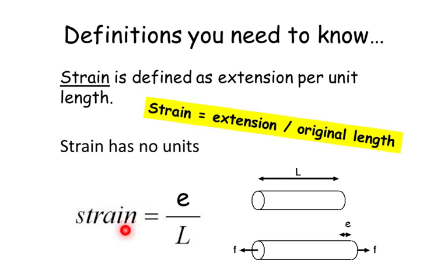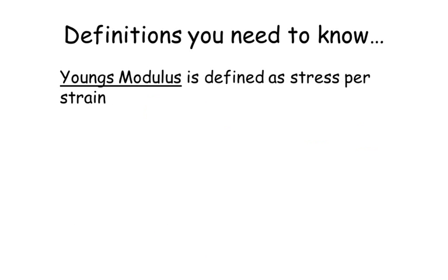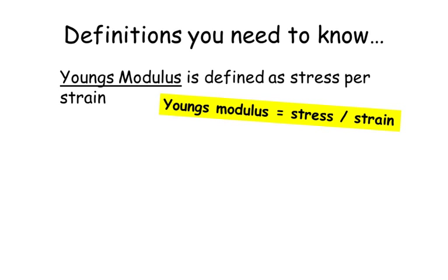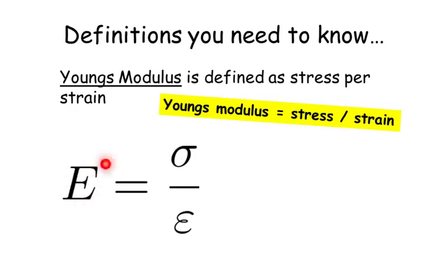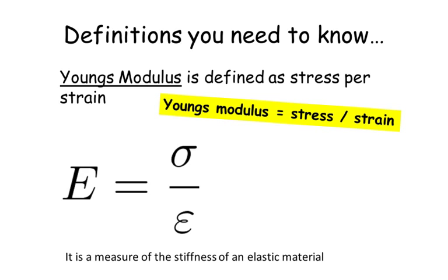So here we have strain is extension divided by length. And finally, our last definition: Young's modulus is defined as stress per strain. To calculate Young's modulus, you divide a value of stress by a value of strain. Young's modulus is normally given the symbol E. We've got sigma for stress, and strain has the symbol epsilon. You can think of Young's modulus as being a measure of the stiffness of an elastic material.